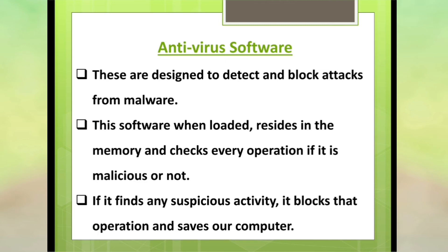You must check for antivirus software every time you put in a pen drive. Similarly, when downloading something from the internet, you must scan the file before downloading as it may also contain a virus. If any virus or suspicious activity is found in a file, the antivirus blocks that operation and saves our computer. So we must have antivirus software installed on our system — it resides in the memory and checks for any virus whenever you download anything or scan your system.